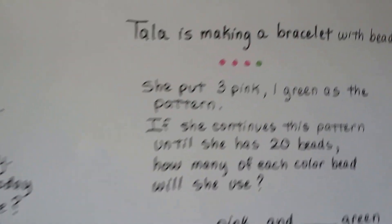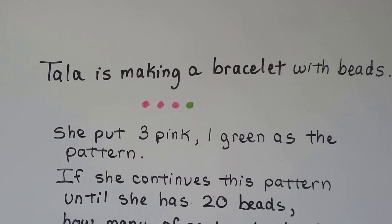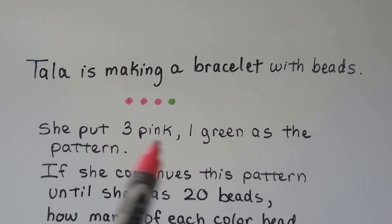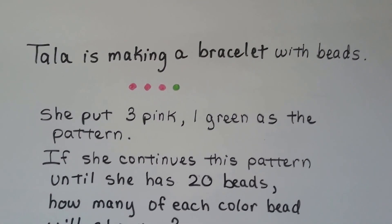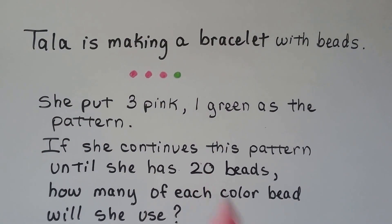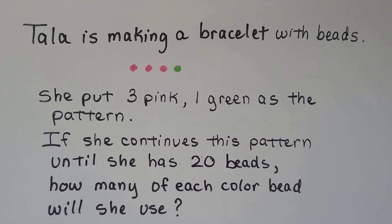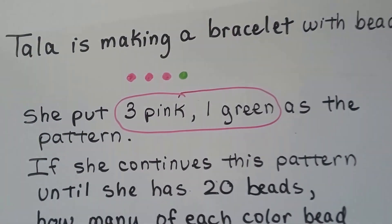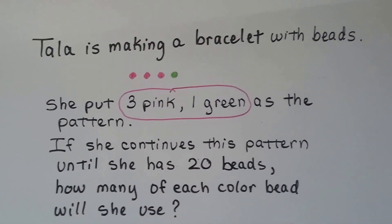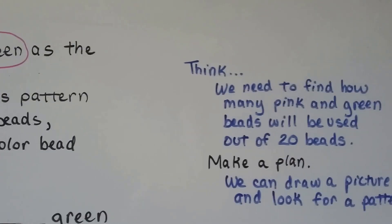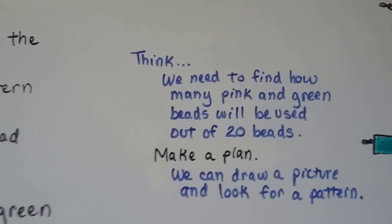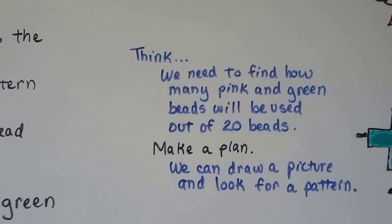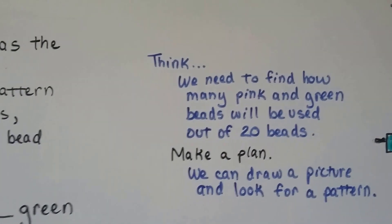This one's a little bit harder. Tala is making a bracelet with beads. She put 3 pink and 1 green as the pattern. That's the pattern she's using — 3 pink and 1 green. If she continues this pattern until she has 20 beads, how many of each color bead will she use? We know the pattern is 3 pink and 1 green. She's going to use 20 beads total. We need to find how many pink and green beads will be used out of 20 beads. We can draw a picture and look for a pattern.